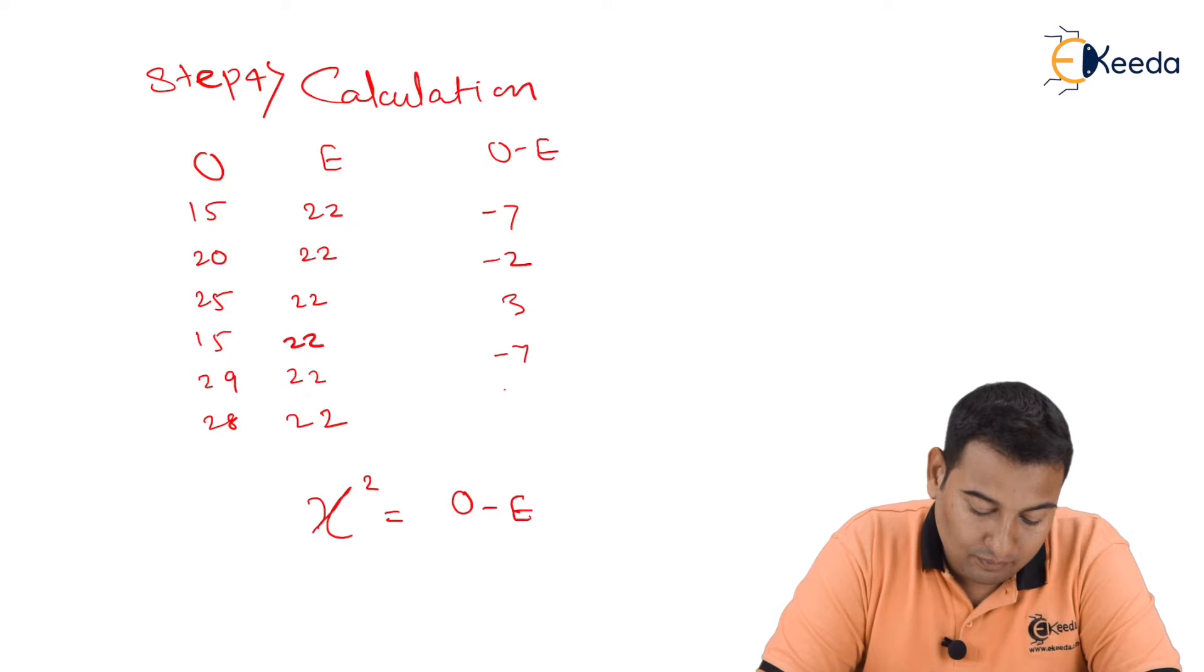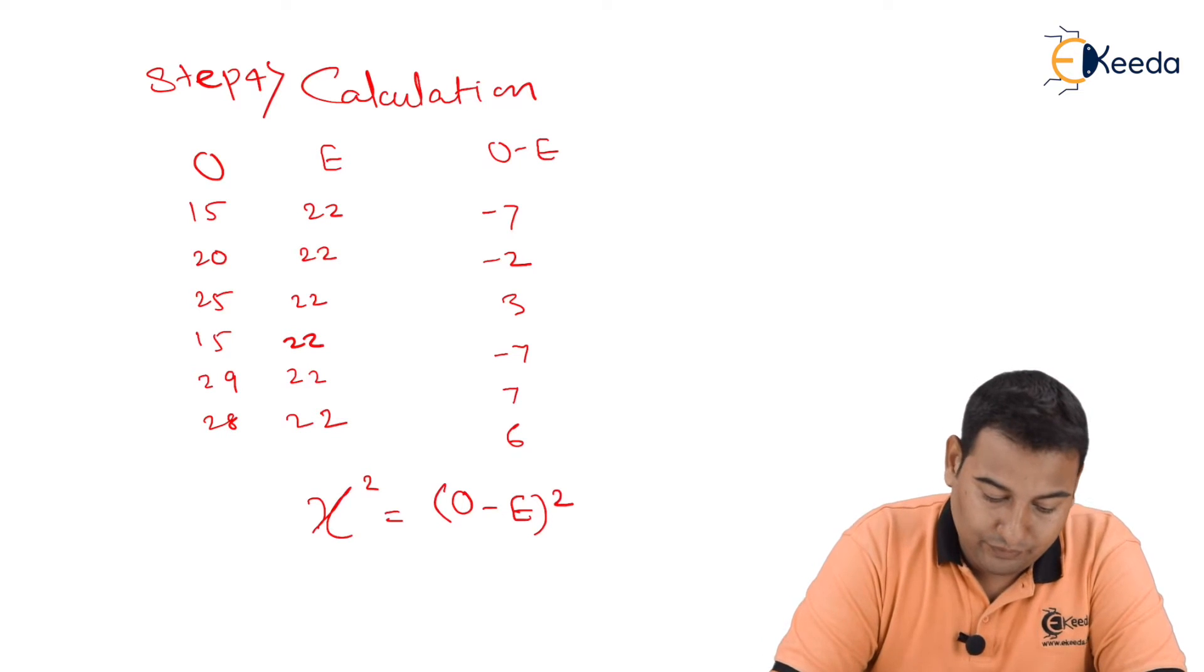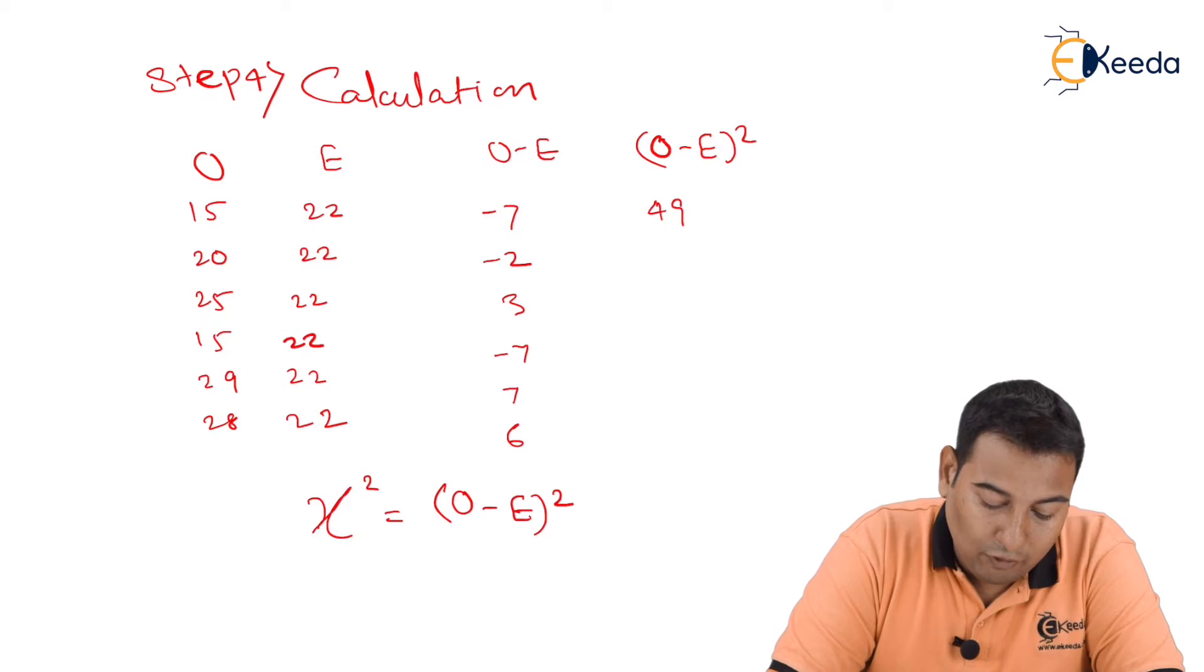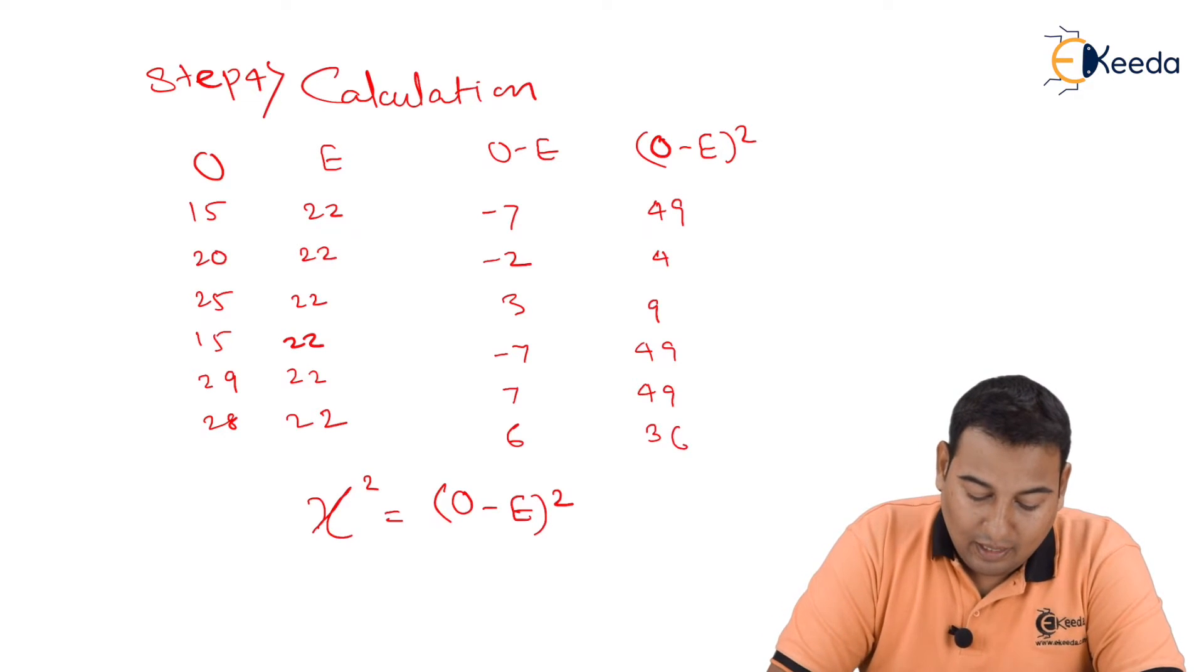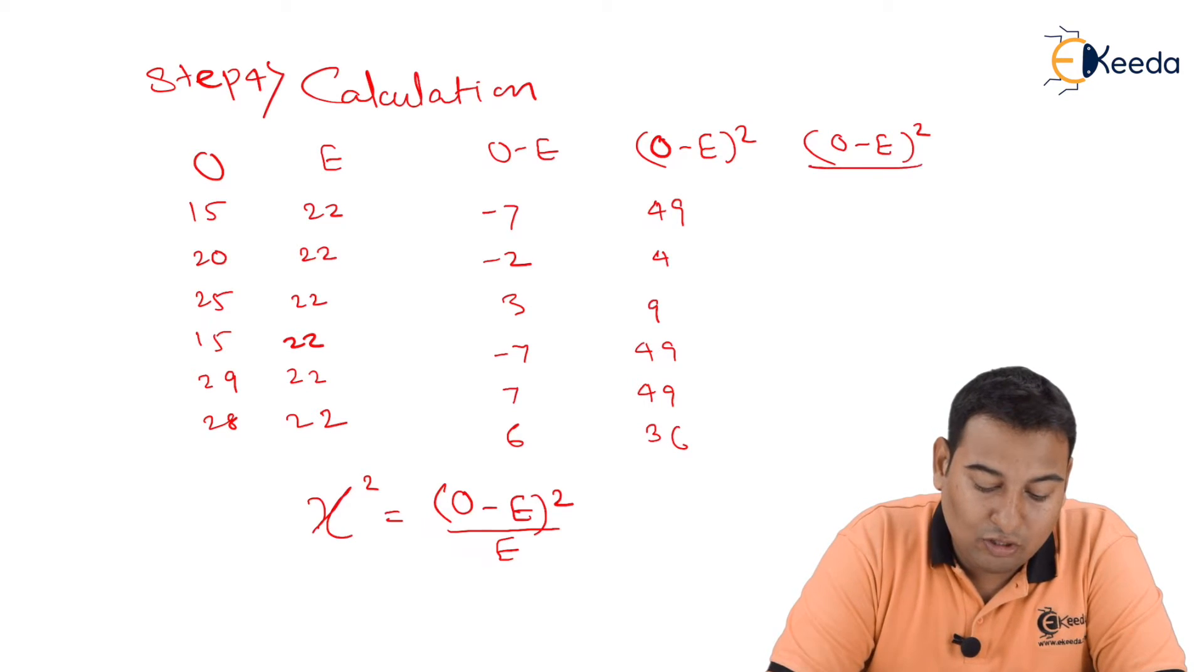The whole squared. So I'm going to find out observed minus expected the whole squared. That is 49, 4, 9, 49, 49, 49, 36.